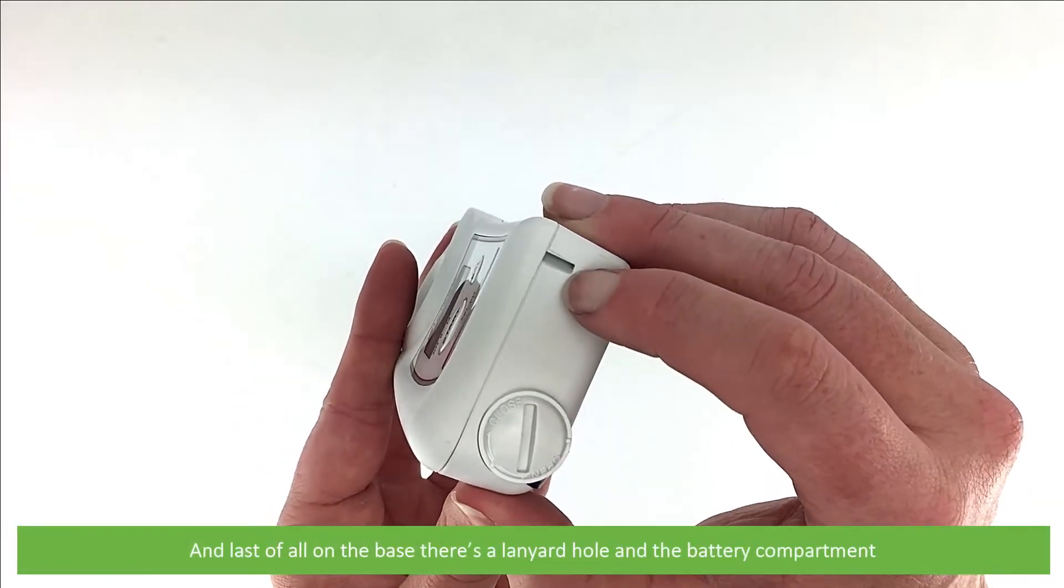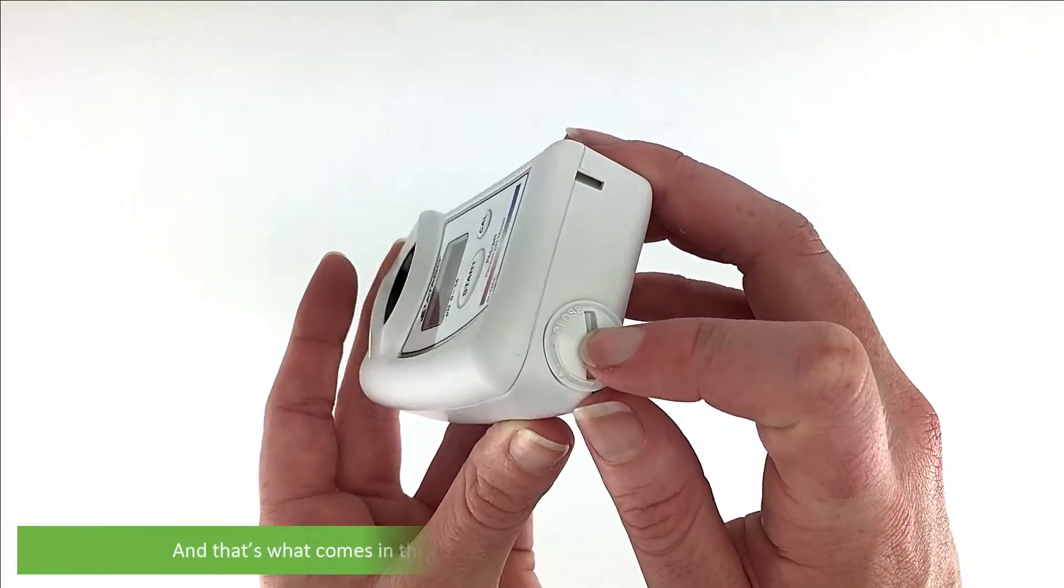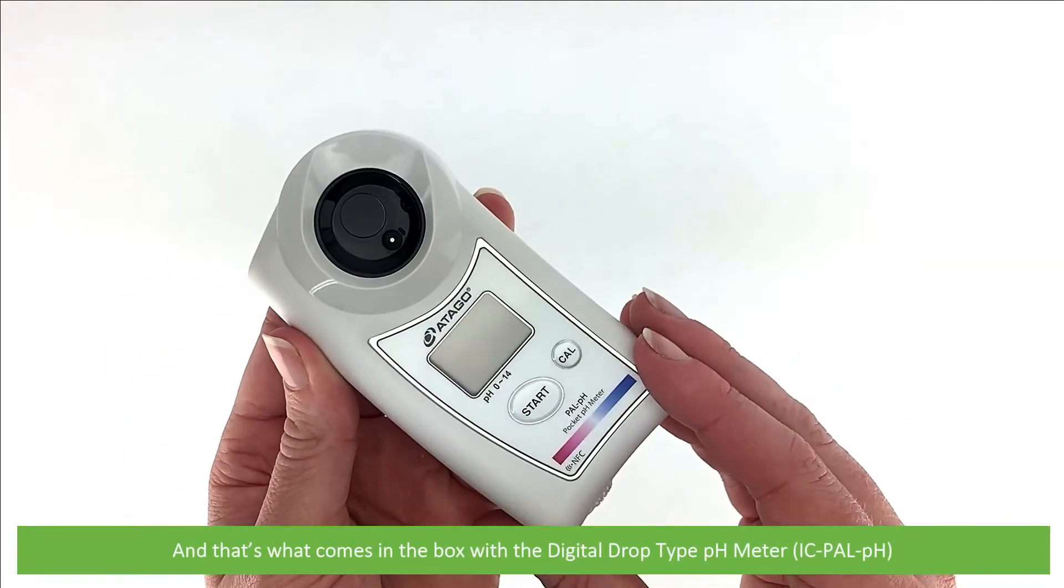And last of all on the base there's a lanyard hole and the battery compartment. And that's what comes in the box with the digital drop type pH meter, the IC PAL PH.